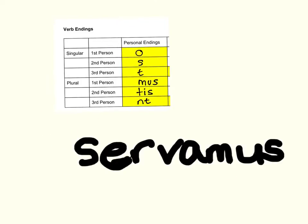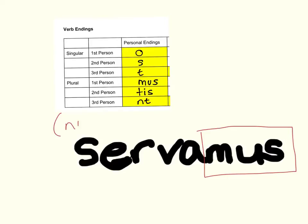Again, first thing we're going to do is isolate that verb ending — draw a box around it. Servamus. I see a mus ending. Mus is plural, so it's more than one, and it's first person, so it's we. In Latin, the word for we is nos. So this says: we protect, because servat means protect.